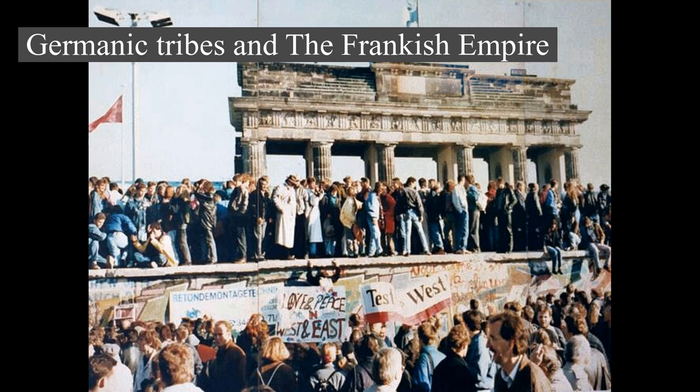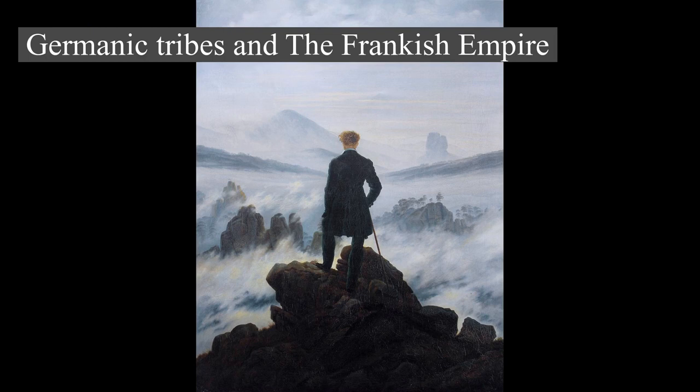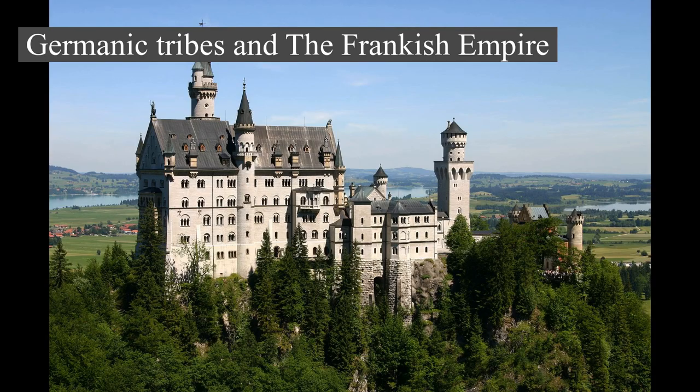However, Baden-Württemberg, southern Bavaria, southern Hesse, and the western Rhineland had been incorporated into Roman provinces. Around 260, Germanic peoples broke into Roman-controlled lands. After the invasion of the Huns in 375, and with the decline of Rome from 395, Germanic tribes moved farther southwest. The Franks established the Frankish kingdom and pushed east to subjugate Saxony, Bavaria, and areas of what is today eastern Germany, which were inhabited by western Slavic tribes.